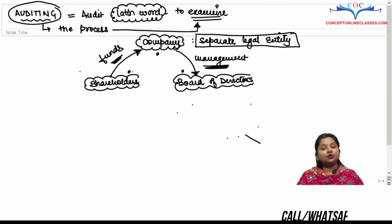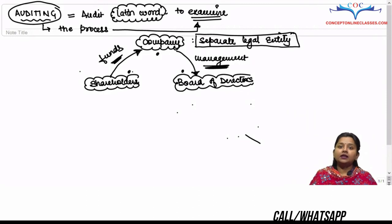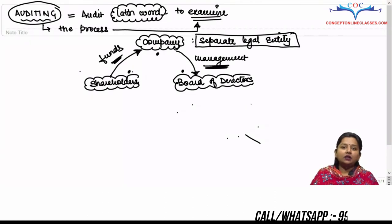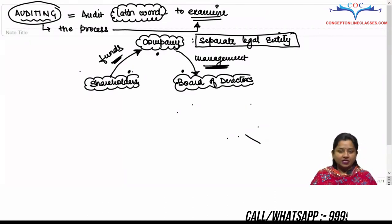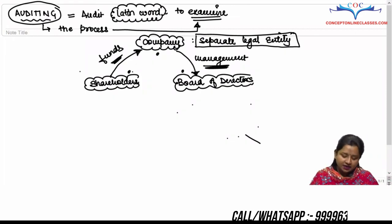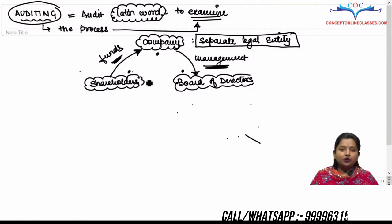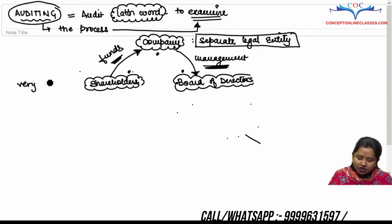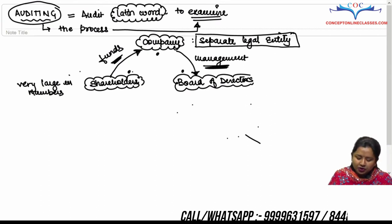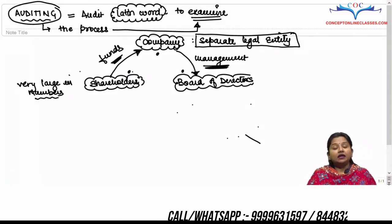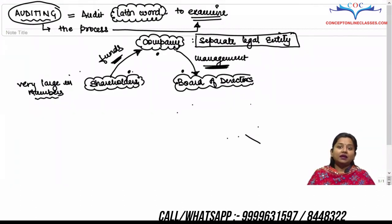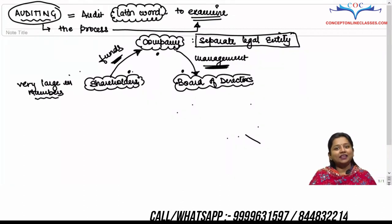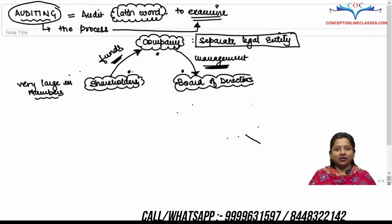Directors may keep changing, but the company's existence always continues unless it is wound up and dissolved. This is called perpetual succession. Now in this separate legal entity, how does work happen? Shareholders put money into the company, but they are very large in numbers — thousands and lakhs of people may have invested money in the company.